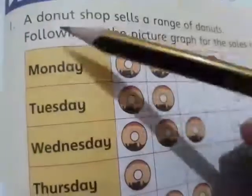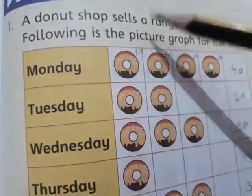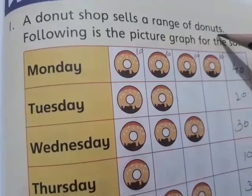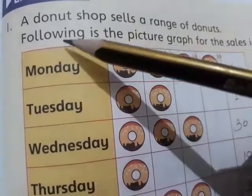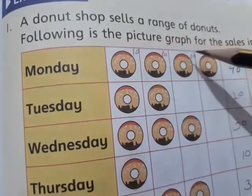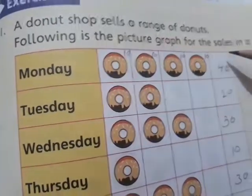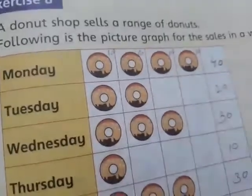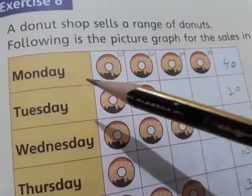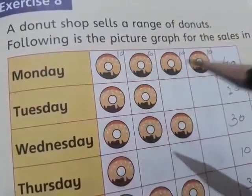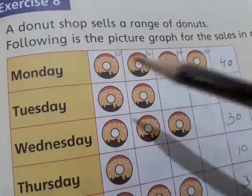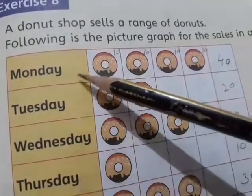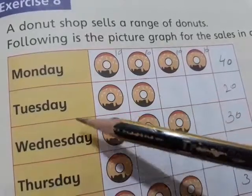Question one: a donut shop sells a range of donuts. The following is the picture graph for sales in a week. The shop is a donut shop, and here we have the days of the week. The graph tells us how many donuts were sold.